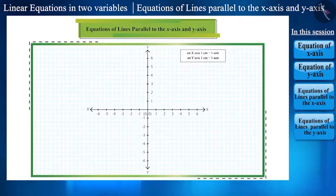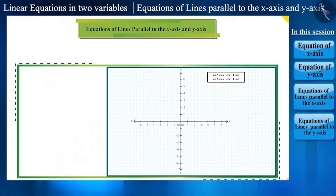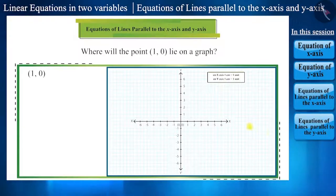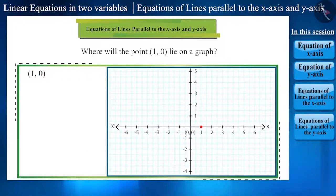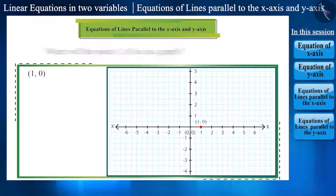Friends, we know that a line is made up of infinitely many points. So let's start by considering a point. Can you tell where will the point lie on a graph? Let's see. Here, the x-coordinate is 1 and the y-coordinate is 0. Hence, this point will lie on the x-axis.